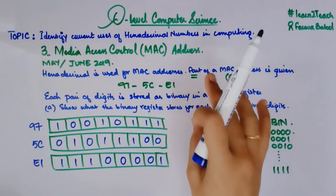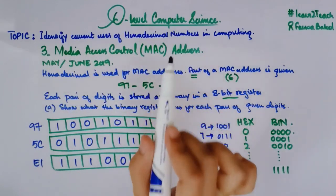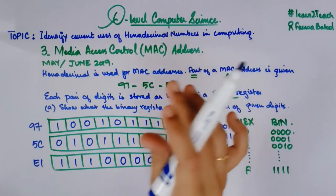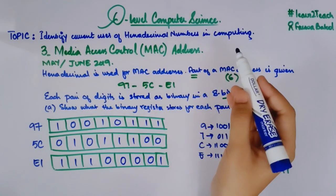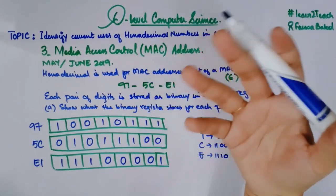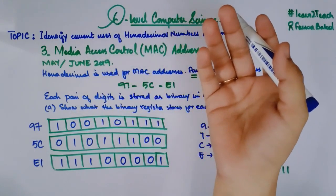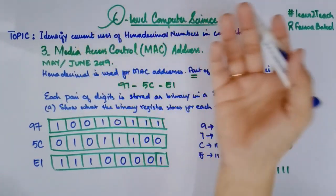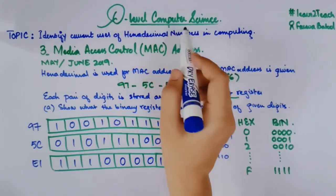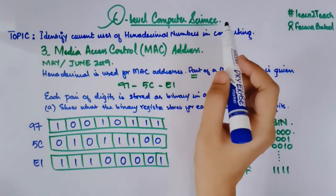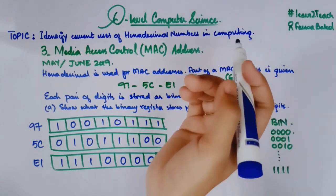This is how this kind of question can appear in your exam. I hope the topic of Media Access Control MAC address is clear to you. Thank you for watching this video. If you have any queries, you can comment below. Please share, like, and subscribe. See you in the next video where I will share another use of hexadecimal numbers — probably web addresses or URLs.